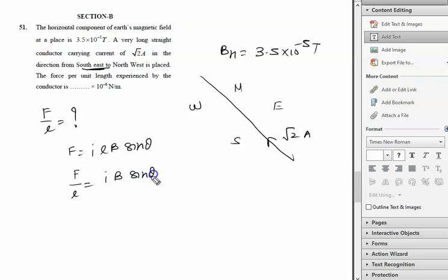Value of the current is √2. Magnetic field is given as 3.5 × 10^-5 tesla. Value of theta, I hope it is visible to all of you.